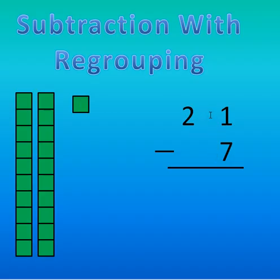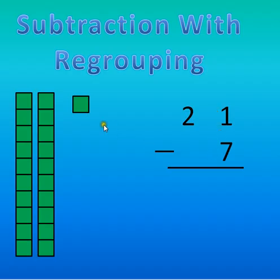Now, 7 is a smaller number than 21, so I know I can subtract 7 from 21. But when I line up the numbers in my ones place like I'm supposed to, and start from the right-hand side and subtract like I'm supposed to, I run into a problem. 1 minus 7 — I don't have 7 blocks, or 7 in my ones place, to subtract.